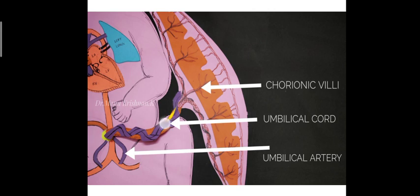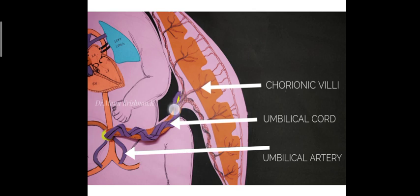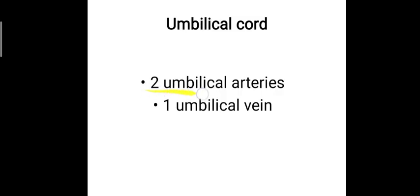The umbilical cord connects the umbilicus of the fetus to the placenta. The umbilical cord consists of two umbilical arteries and a single umbilical vein. The oxygenated, nutrient-rich blood coming from the placenta is carried through the umbilical vein, while the deoxygenated blood from the systemic circulation is carried through the umbilical arteries back to the placenta.